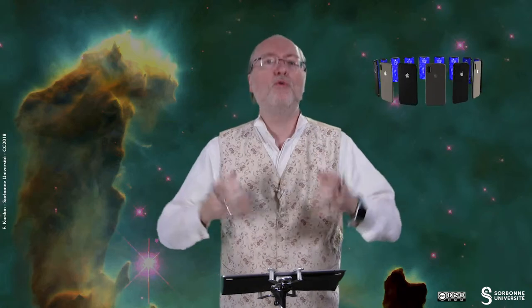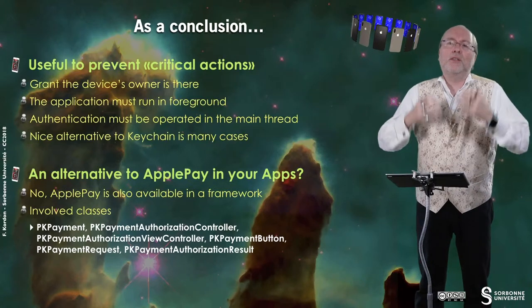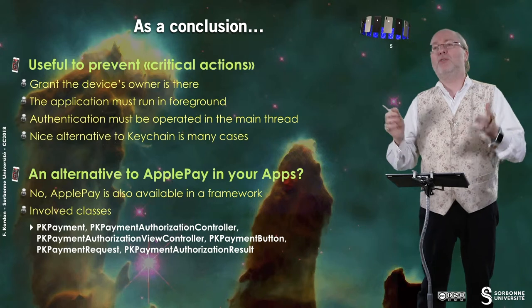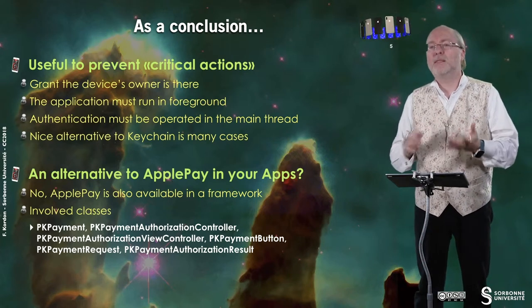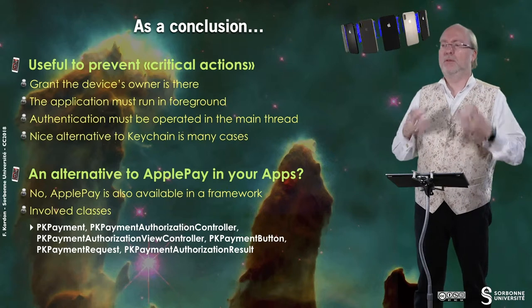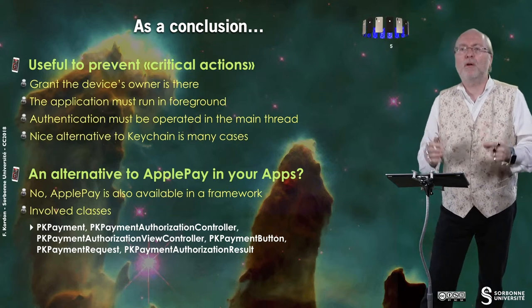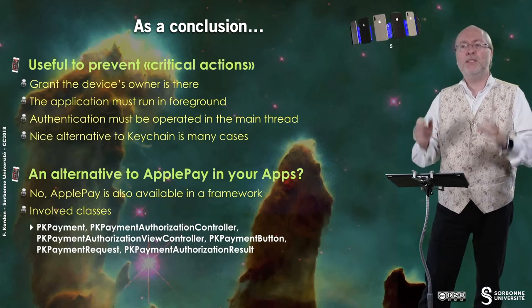As a conclusion, it's a really useful mechanism to prevent critical actions from being performed by someone who isn't the device owner. It's supposed to confirm that the device owner is present, even if these mechanisms are not 100% reliable — people have shown you can fool them with silicone fingerprint copies or special masks for Face ID, but it requires significant organization. One important thing: the application must be running in the foreground, as these facilities are absolutely not available in the background, which is totally normal and enforced by iOS. Authentication must also be operated on the main thread. It's a nice alternative to Keychain in many cases.